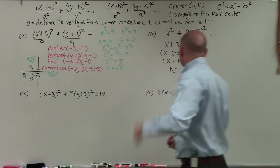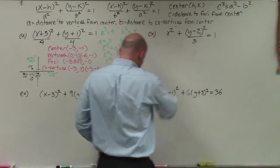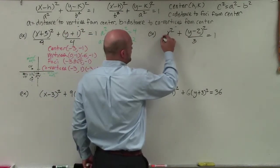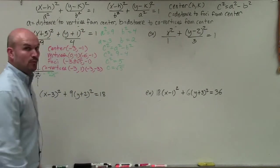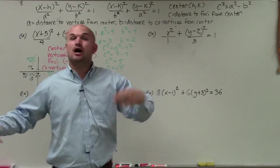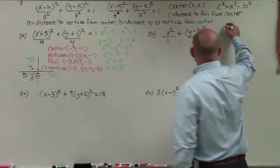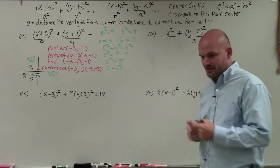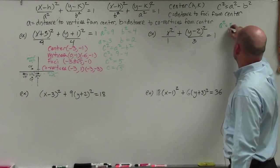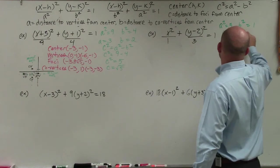In the next example, a lot of students get stuck because we won't have an explicit denominator of 1. We want to make sure it's written in standard form. If we don't have a denominator explicitly written, then we know that denominator is going to be 1. So our two denominators are 3 and 1. Those represent a squared and b squared. Since a squared is always larger than b squared, we can say a squared equals 3 and b squared equals 1. Therefore, a equals the square root of 3 and b equals 1.